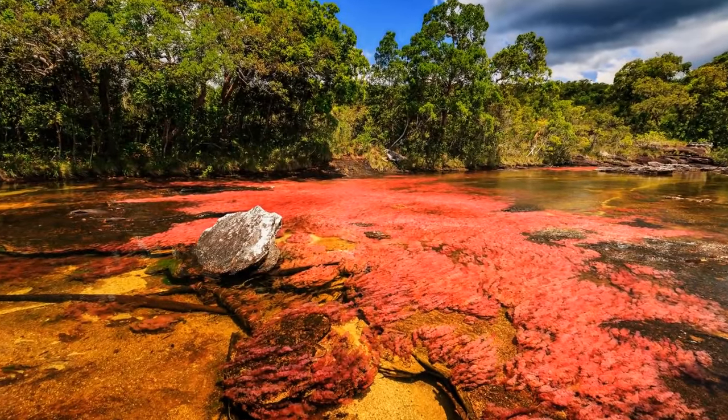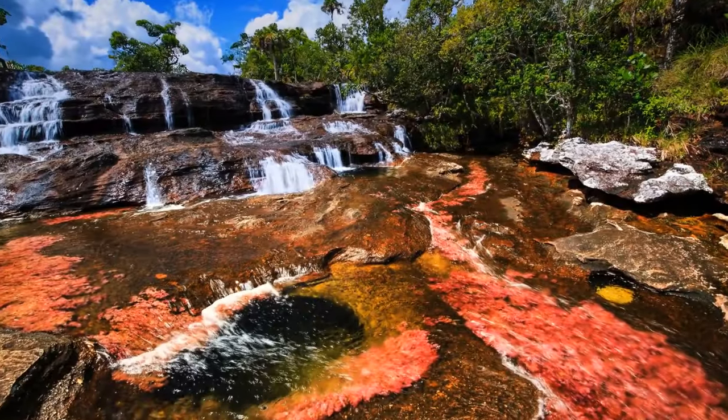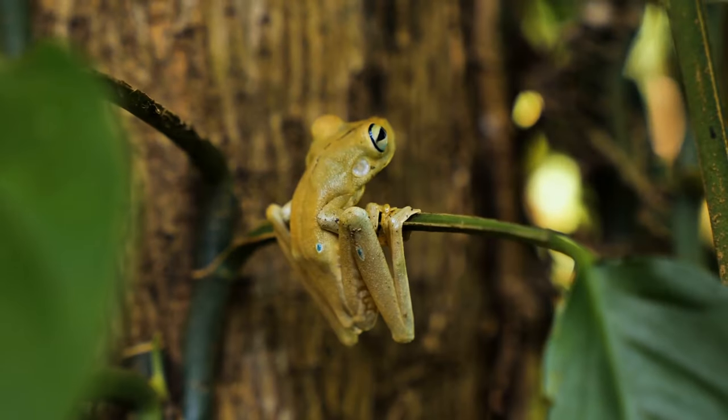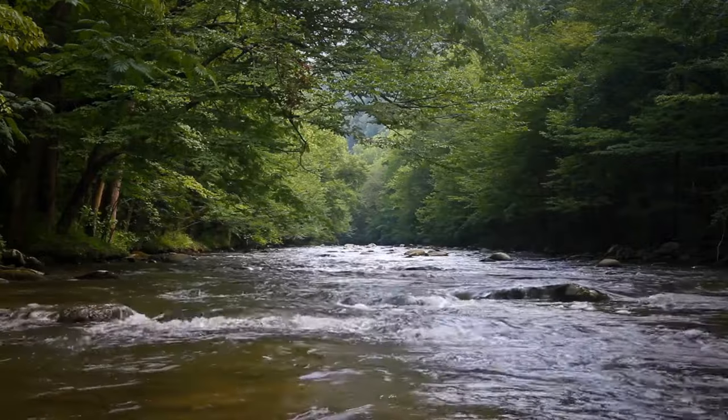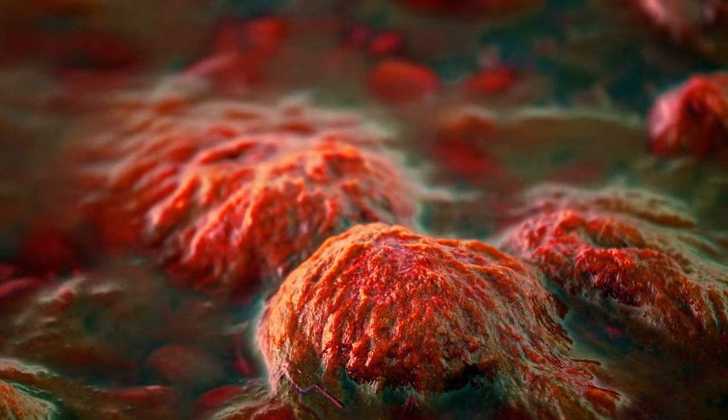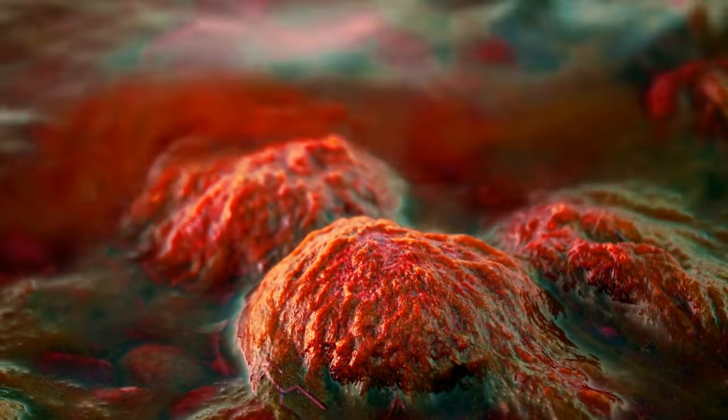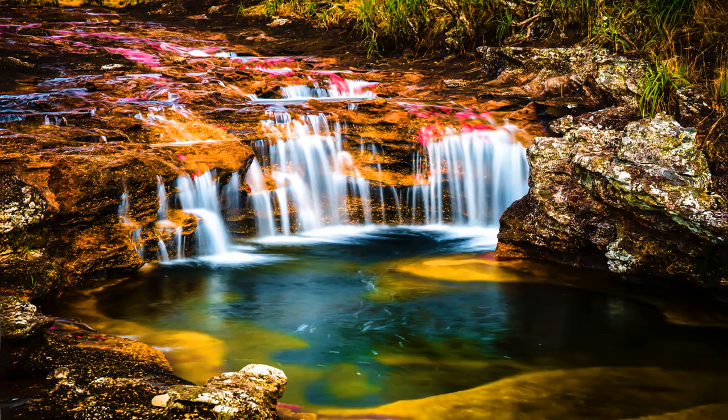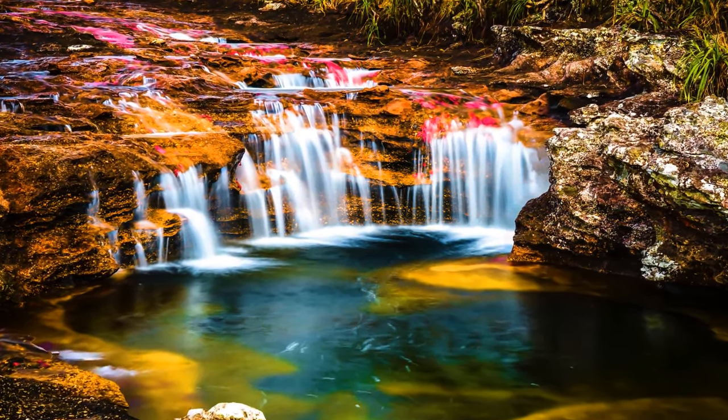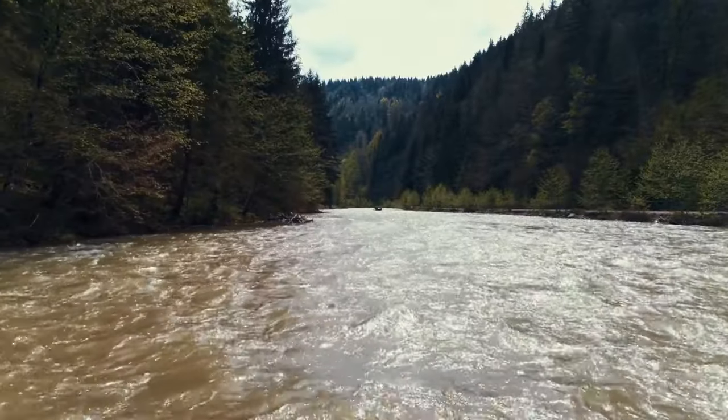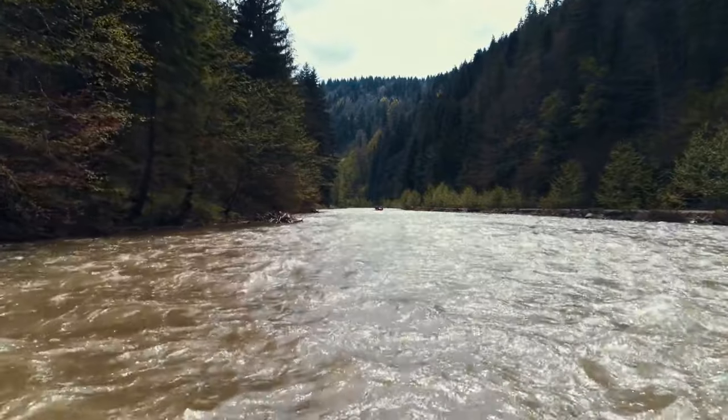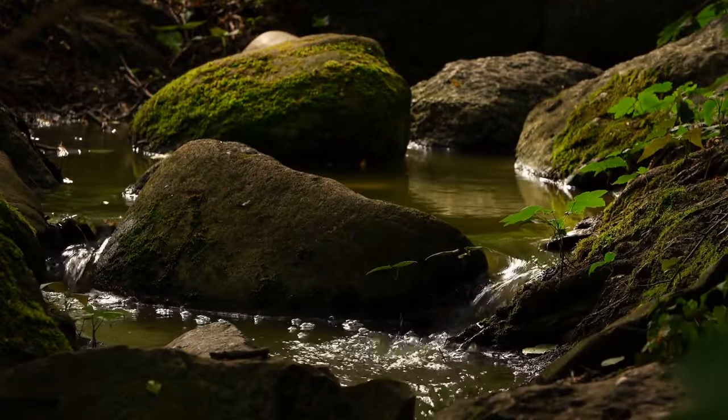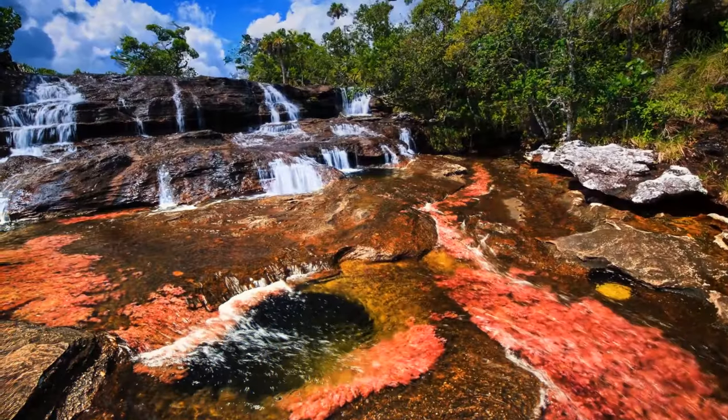The River of Five Colors, Cano Cristales in Colombia, has the unofficial title of the most beautiful river in the world. For most of the year, it looks like any other regular river. The real magic happens between the wet and dry seasons when the water level is just perfect. This unique river floor is lined with a special plant, and when the conditions are right, it bursts into a dazzling display of colors. Think vibrant reds, stunning yellows, and lush greens, all mingling with the blue water. This phenomenal display only lasts for a few weeks, from September through November.